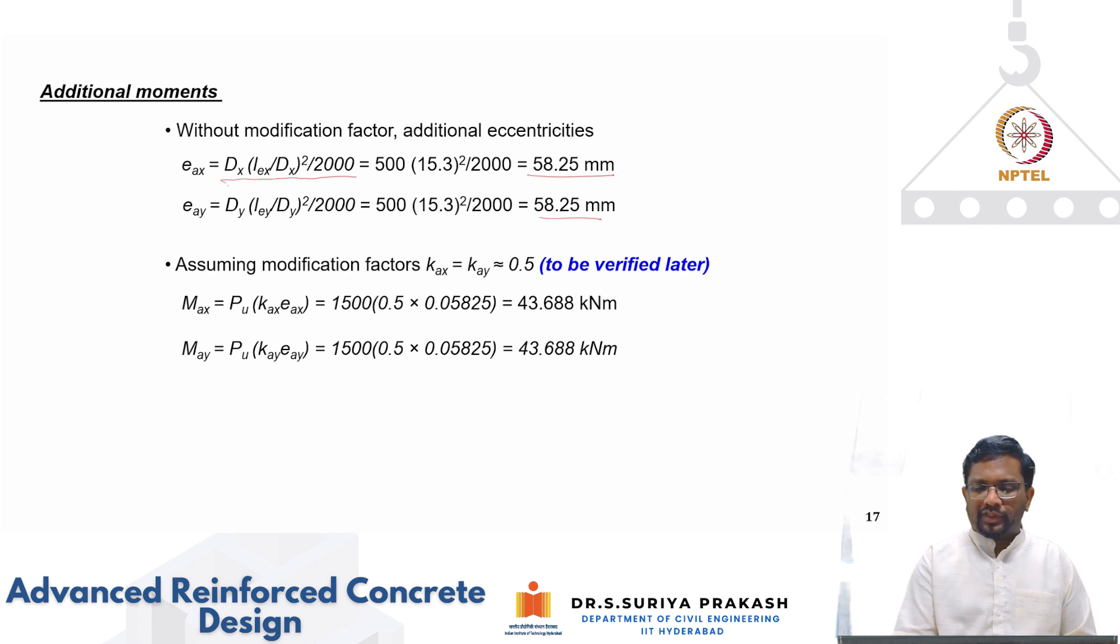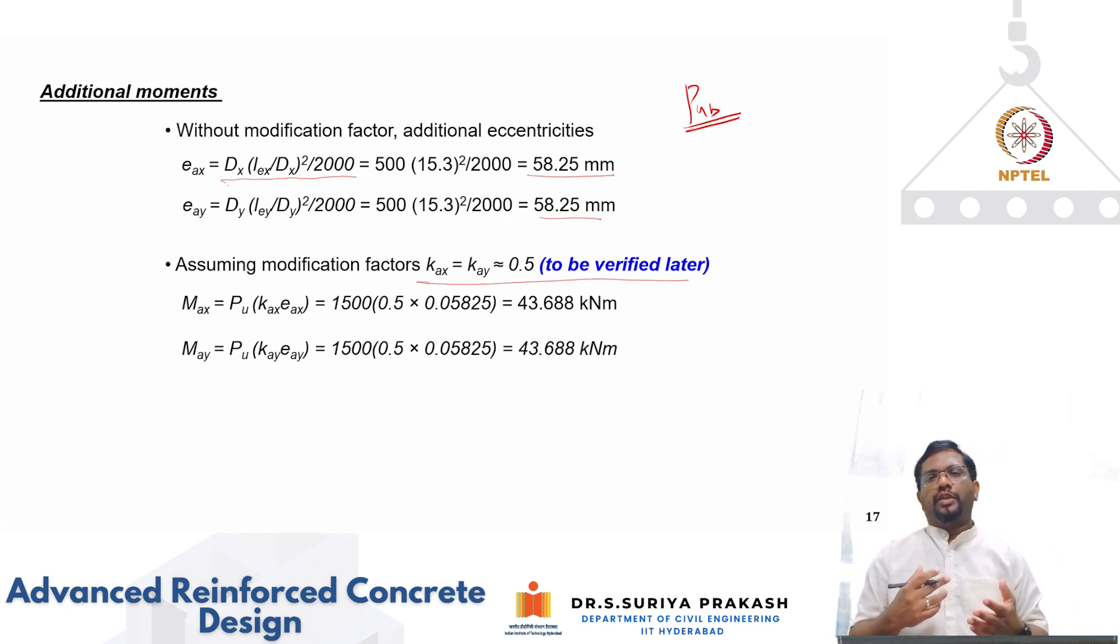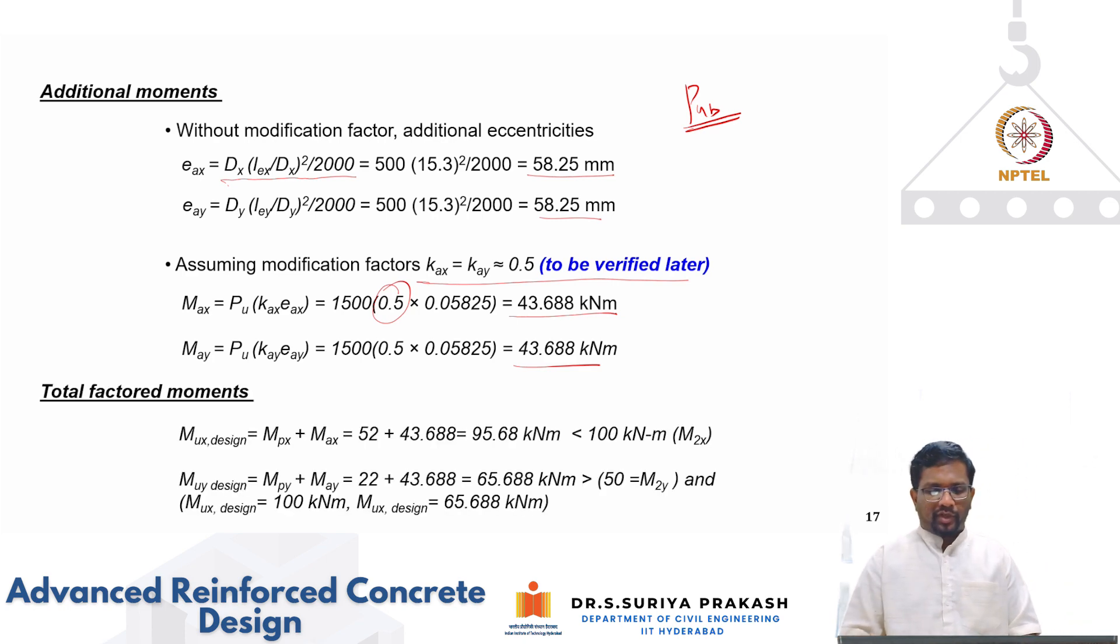Now in this case I am going to initially assume a reduction factor or modification factor as 0.5 which we need to verify. Because I do not know for the reinforcement what would be my balanced capacities, I have not still designed what is the reinforcement. So to do that first I have to assume this reduction factor as k and you calculate your additional moments which is 43 and 43 about both axes.